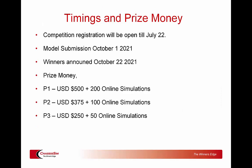Timings and prize money: competition registrations open today, July 22. Model submission is October 1, 2021, and the winners are going to be announced October 22, 2021. This year we're taking a different approach with prize money. Where last year we were very generous in terms of prize money, one thing we found was that a lot of people were really enthusiastic and used ChassisSim quite a bit — then afterwards, that was it, they were done. So the way we're doing prizes this year is both cash and online simulations.